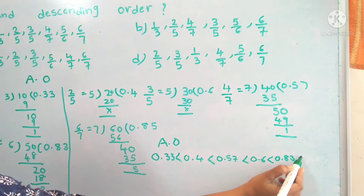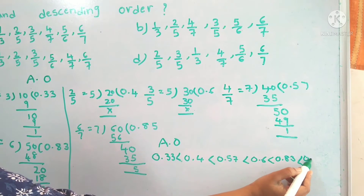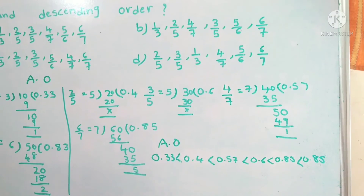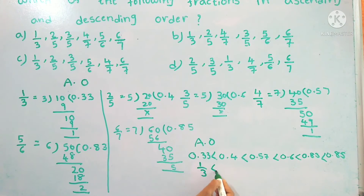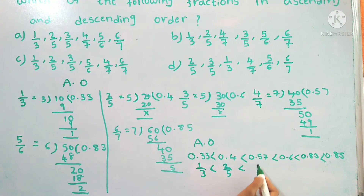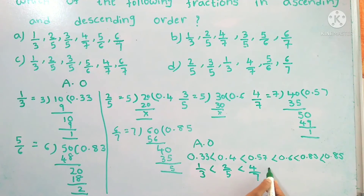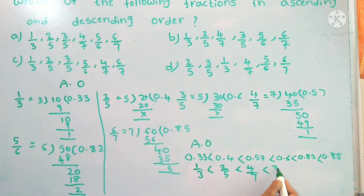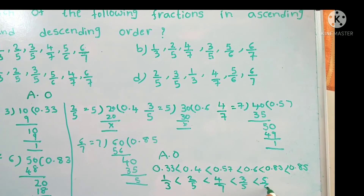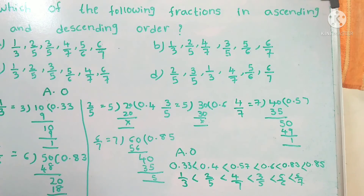So 5 by 6 equals 0.83, which is less than 6 by 7 equals 0.85. Now writing in ascending order as fractions: 1 by 3 is less than 2 by 5 is less than 4 by 7 is less than 3 by 5 is less than 5 by 6 is less than 6 by 7.